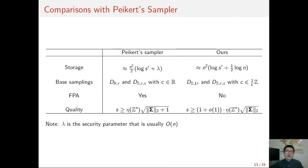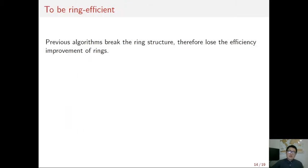We have seen the sampling algorithm for generic integer matrix. For better performance, actually many lattice cryptosystems are built in the ring setting. The previous algorithm can indeed apply to the ring setting by simply viewing the ring element as its matrix form. However, the decomposition algorithm would break the underlying ring structure so that it loses the efficiency improvement of the ring.